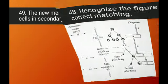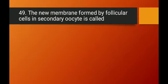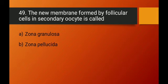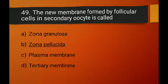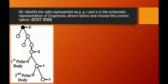Question number forty-nine: the new membrane formed by follicular cells in the secondary oocyte is called what? The options are zona granulosa, zona pellicida, plasma membrane, or tertiary membrane. The correct answer is zona pellicida. Option B is the right answer.